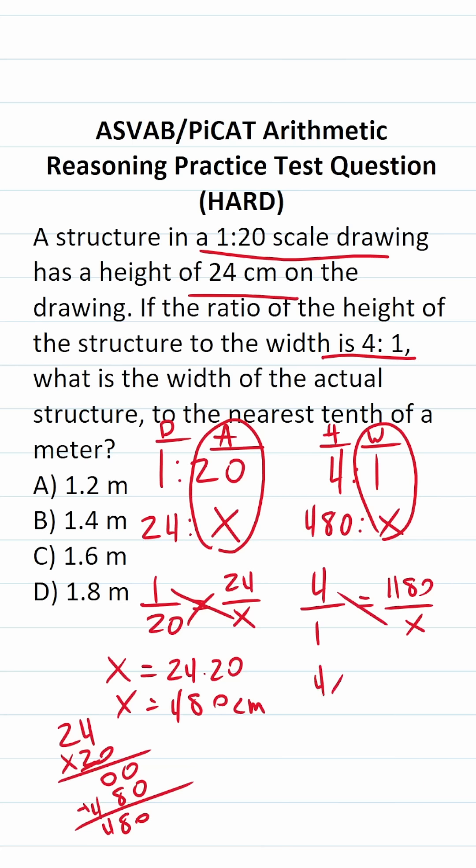All right, 4 times x is 4x equals 1 times 480 is 480. To get x by itself, we're just going to divide both sides of this equation by 4. This says x equals 4 divided by 4 is 1. 8 divided by 4 is 2. And then we just tack on that 0.